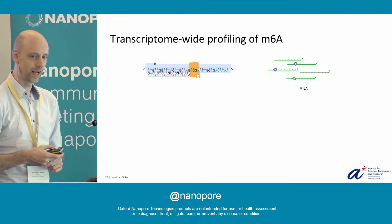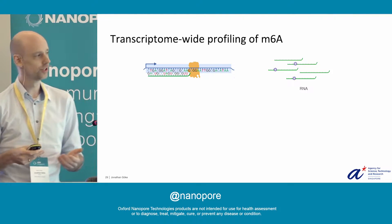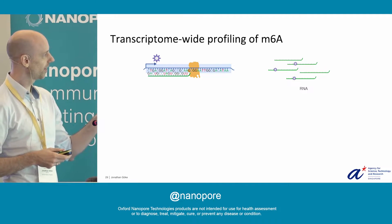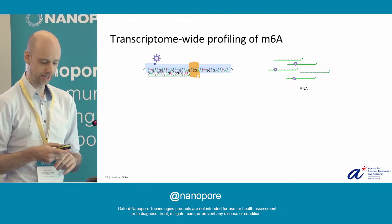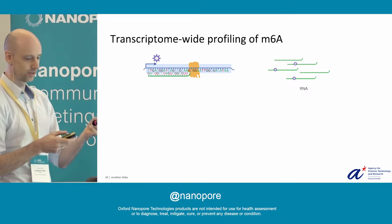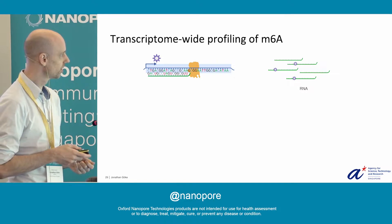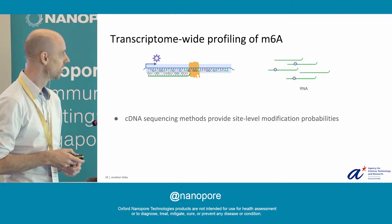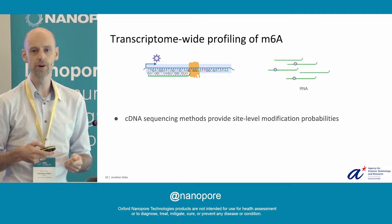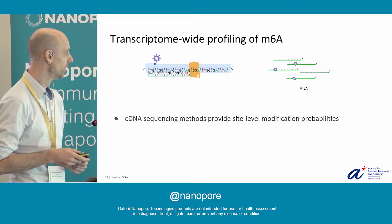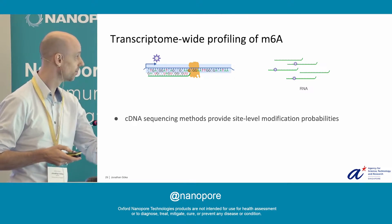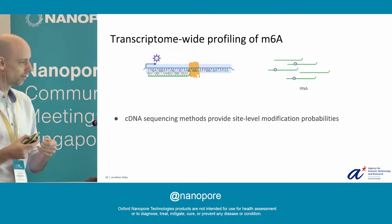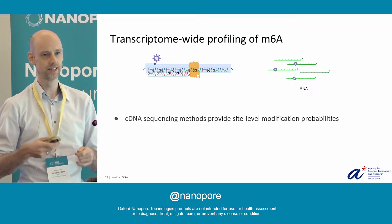So how do we profile M6A transcriptome-wide? In principle, what we could do — and that's how these cDNA sequencing-based methods work — we identify the position of M6A at individual RNAs. One extracts those sequences and uses a sequencing approach to align it back to the genome. From that approach, we can identify the position of each gene where these M6A modifications can occur. Using these methods, we can identify what we call the site-level modification probability — which gene can generate modified RNAs.